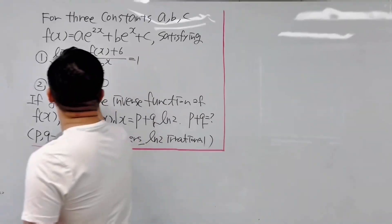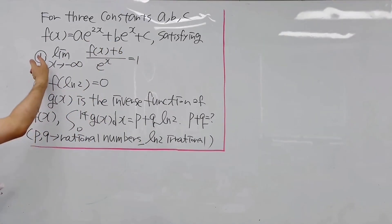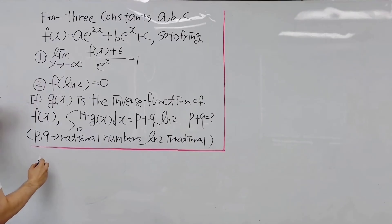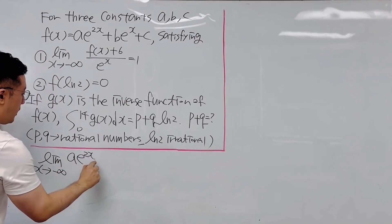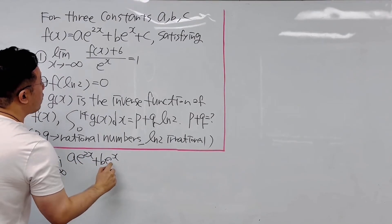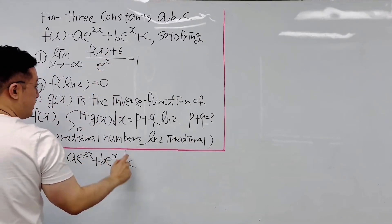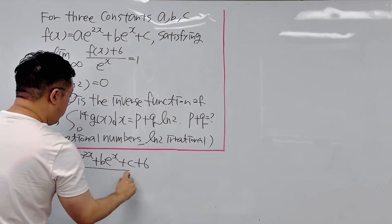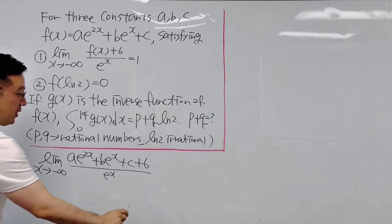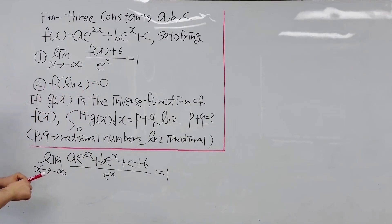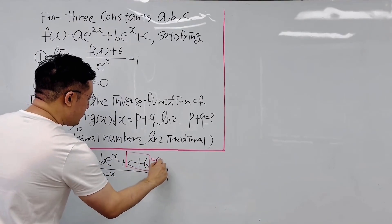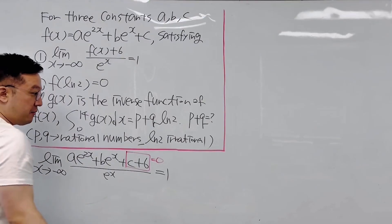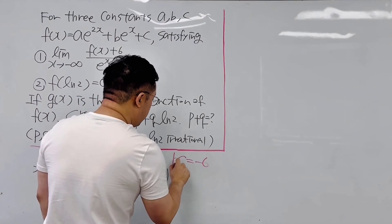Using the first condition, we have the limit as x goes to negative infinity of a times e to the power of 2x plus b times e to the power of x plus c, all plus 6, over e to the power of x. In order for this to equal 1, the constant term part — c plus 6 — must equal 0. So automatically we get c equals negative 6.